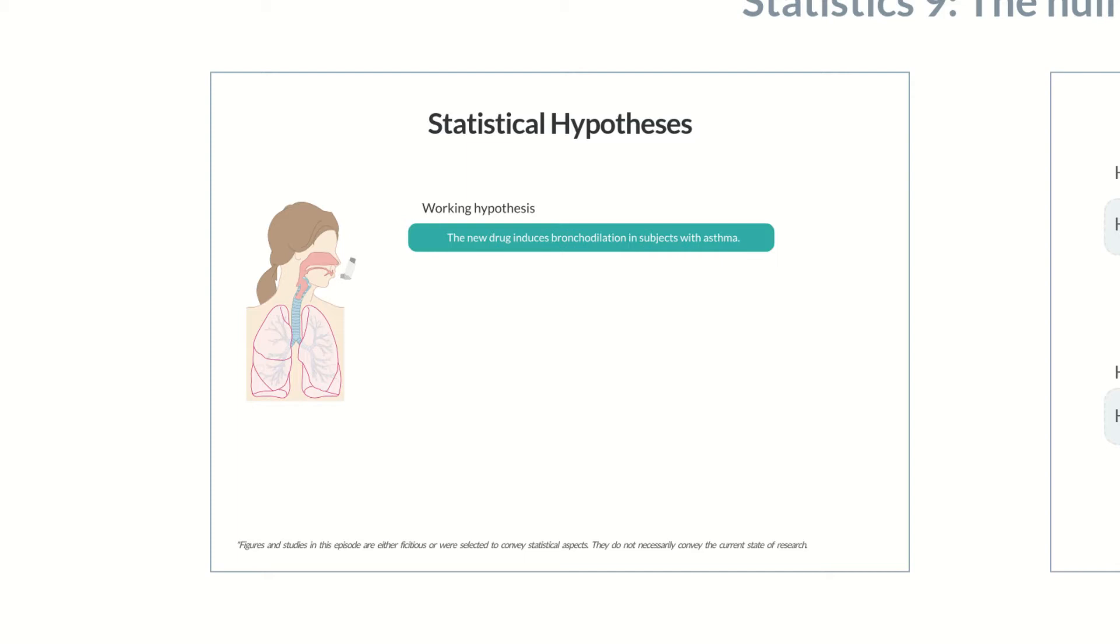However, this hypothesis isn't suitable for conducting a study because it's too general and therefore harder to test. So, which variables should be used to assess the drug's success? And what should the study measure?